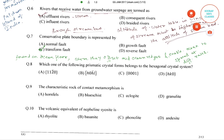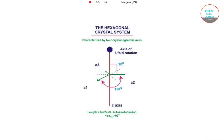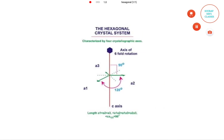The next question asks which of the following prismatic crystal forms belong to the hexagonal crystal system. As shown in this pictorial representation, the hexagonal crystal system has four crystallographic axes — three equal horizontal or equilateral axes that are at 120 degrees to each other, and one vertical axis which is perpendicular to the other three.